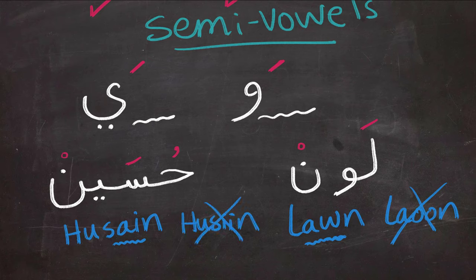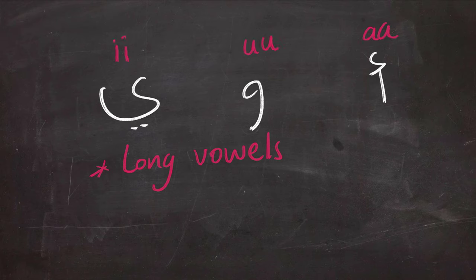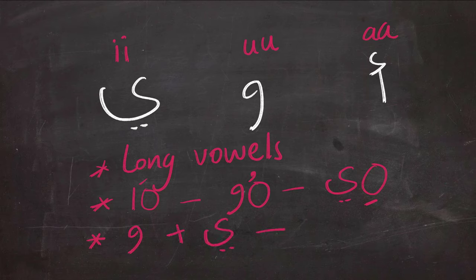So the most important rules to remember are: long vowels are 'a,' 'o,' and 'e' — three in Arabic — and they must be preceded by a short vowel: fatha, dhamma, or kasra. Waw and ya can act as semi-vowels if they are preceded by fatha.